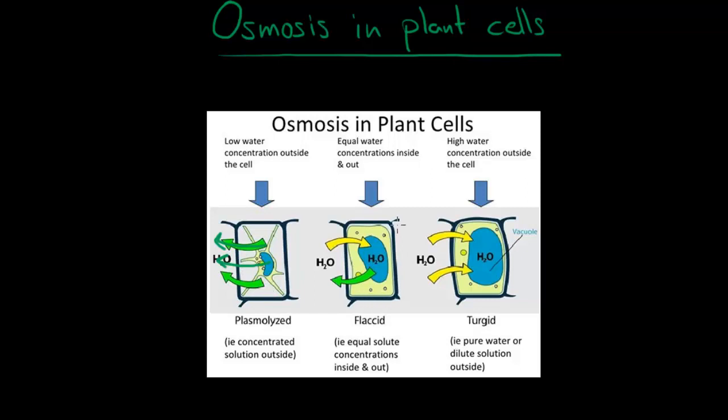In the second picture, which is a state known as flaccid, the amount of water that enters the cell is equal to the amount of water that leaves the cell. So in this case, the plant cell stays in a flaccid form.